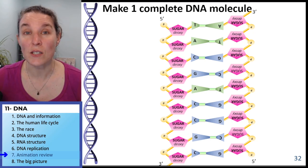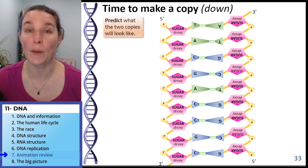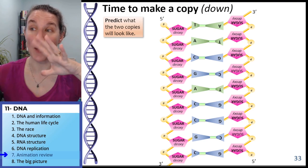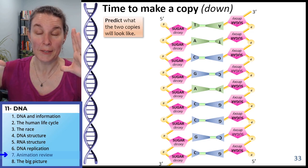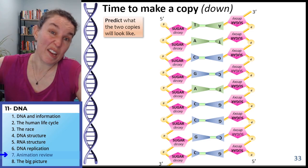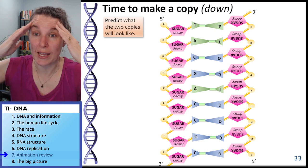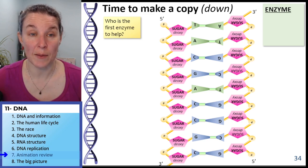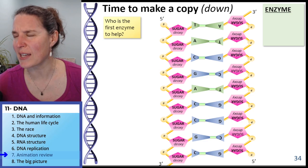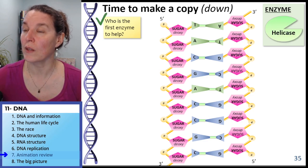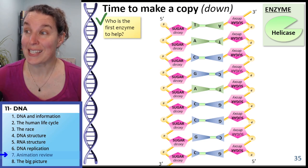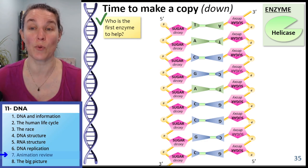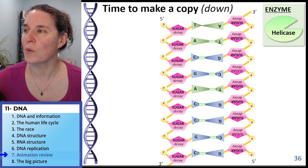Are you ready to go through some replication? We're going to replicate in the downward direction. Predict what the two copies are going to look like. What's our first enzyme that's going to be involved? Who would you guess we would need to have involved here? We got to get helicase involved because helicase is the guy who's going to split, break all those hydrogen bonds down the middle and separate the two strands of DNA. Get to work, helicase.